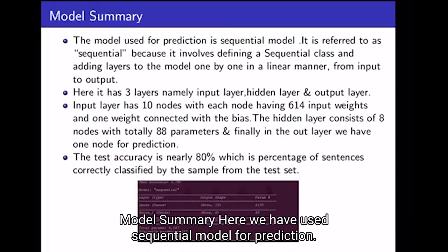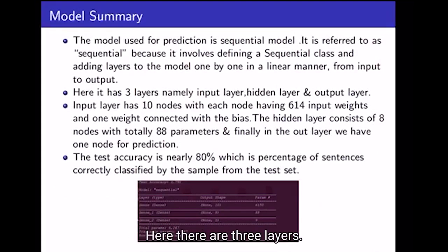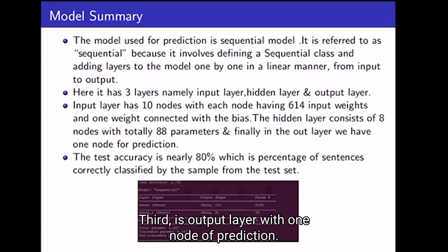For the model summary, we used a sequential model for prediction, which adds layers to the model one by one from input to output. There are three layers: the first is the input layer with 10 nodes, the second is the hidden layer with 8 nodes, and the third is the output layer with one node for prediction. We achieved nearly 80% test accuracy.